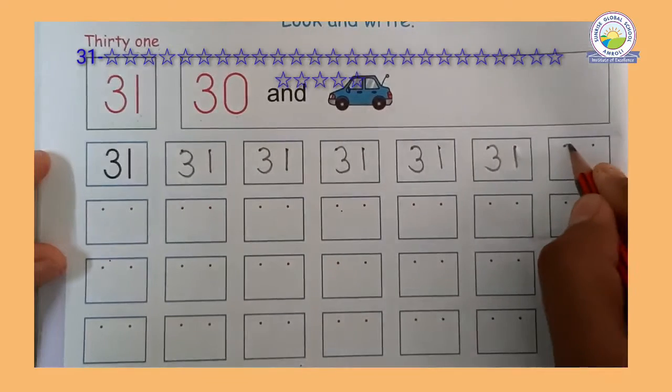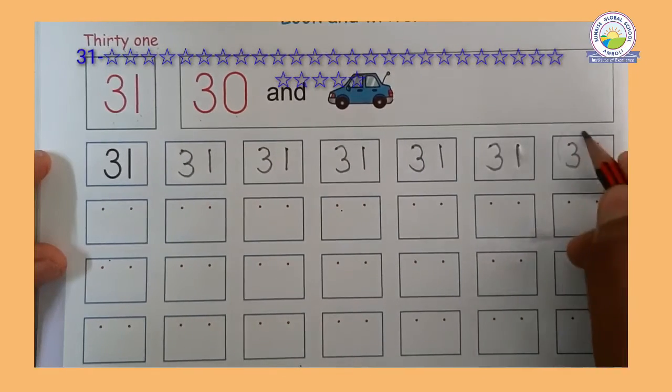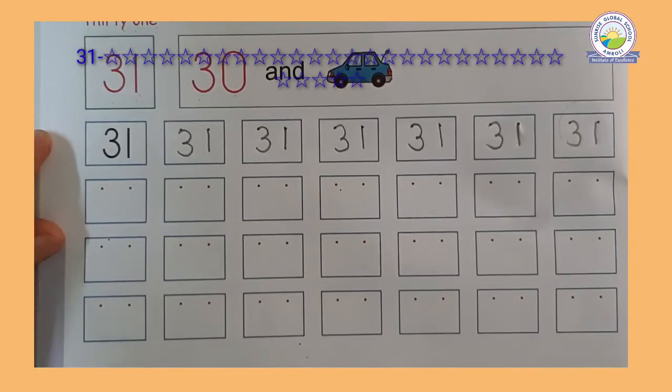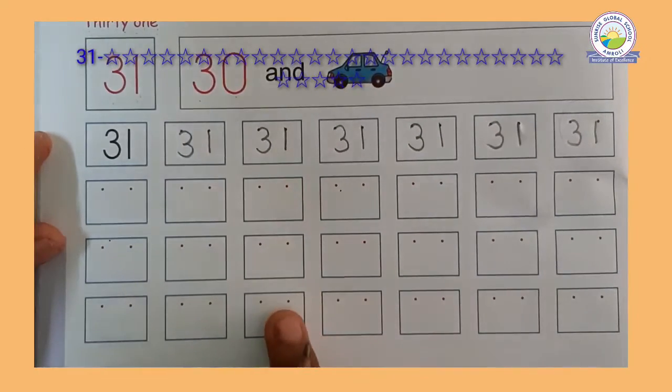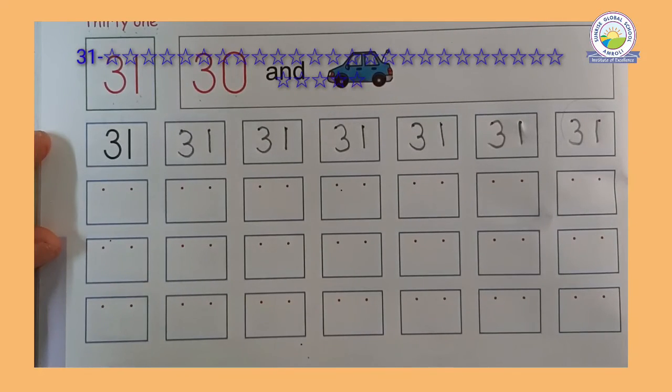When 3 and 1 are together, then 31. Okay, children. So like this, you have to do these 3 boxes. Okay, bye-bye. See you.